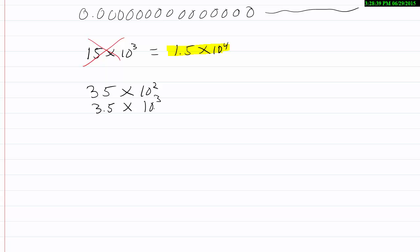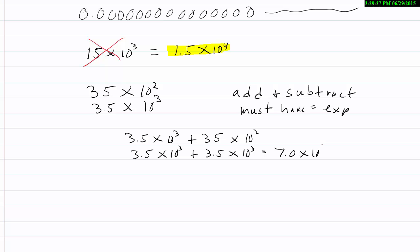If you need to add and subtract numbers in scientific notation, you must have the same exponent. So if I want to combine, well let's just use these numbers above, 3.5 times ten to the third, plus thirty-five times ten to the second. I can't add those directly, I have to make them the same. So, 3.5, I'm going to go with the ten to the third, and my answer then seven times ten to the third. We have to have matching exponents before we can add or subtract.